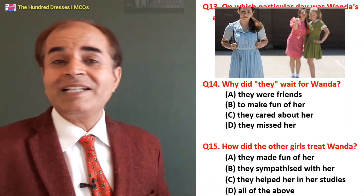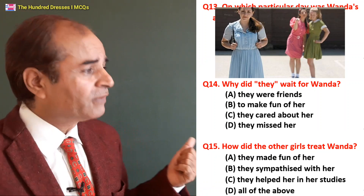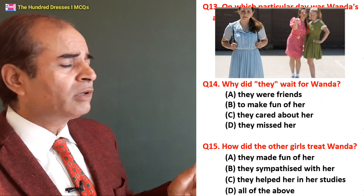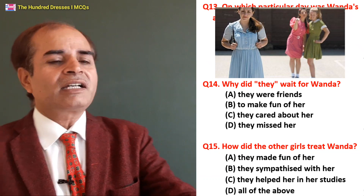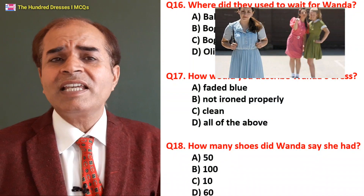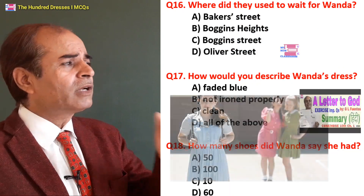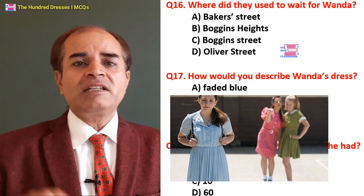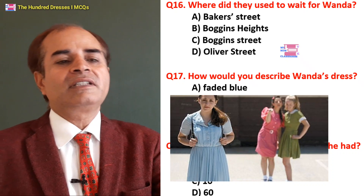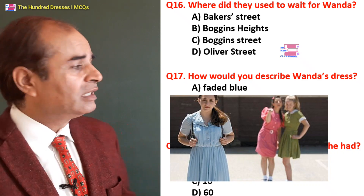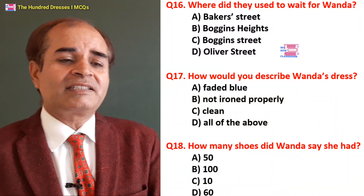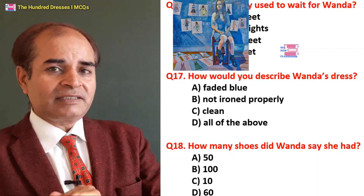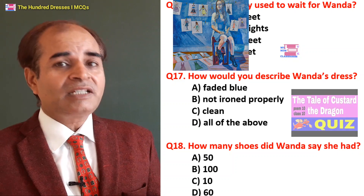Fifteenth question: How did the other girls treat Wanda? They made fun of her — yes. They sympathized with her — no. They helped her in her studies — no. A is the right answer — the other girls also used to make fun of her. Sixteenth question: Where did they wait for Wanda? Baker Street? Boggin's Heights? Boggin's Street? Oliver Street? Oliver Street is the right answer — D is the right answer. Seventeenth question: How would you describe Wanda's dress? Faded blue — yes. Not ironed properly — yes. Clean — yes. D — all of the above is the right answer.